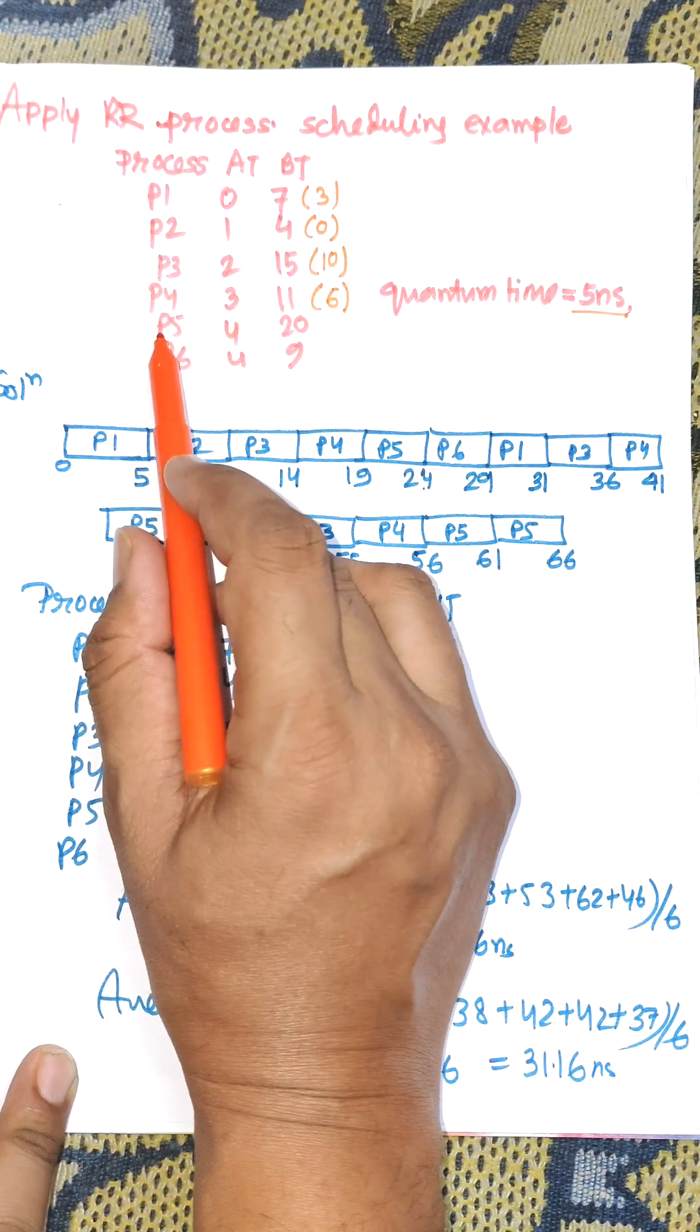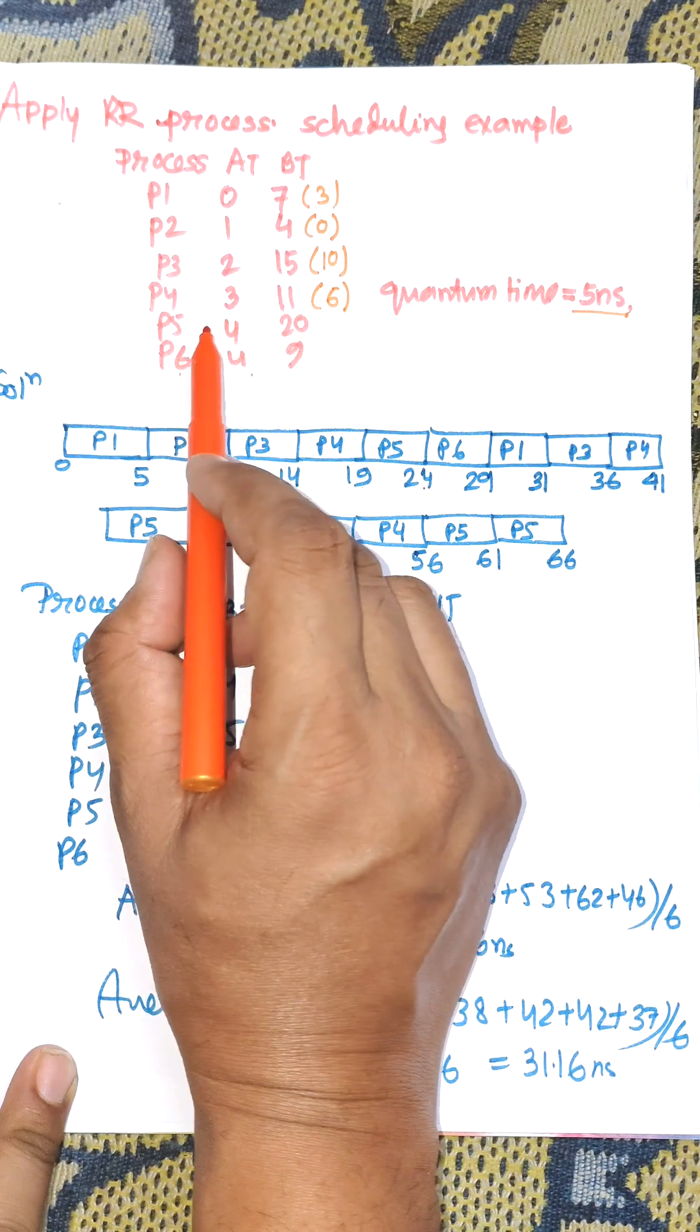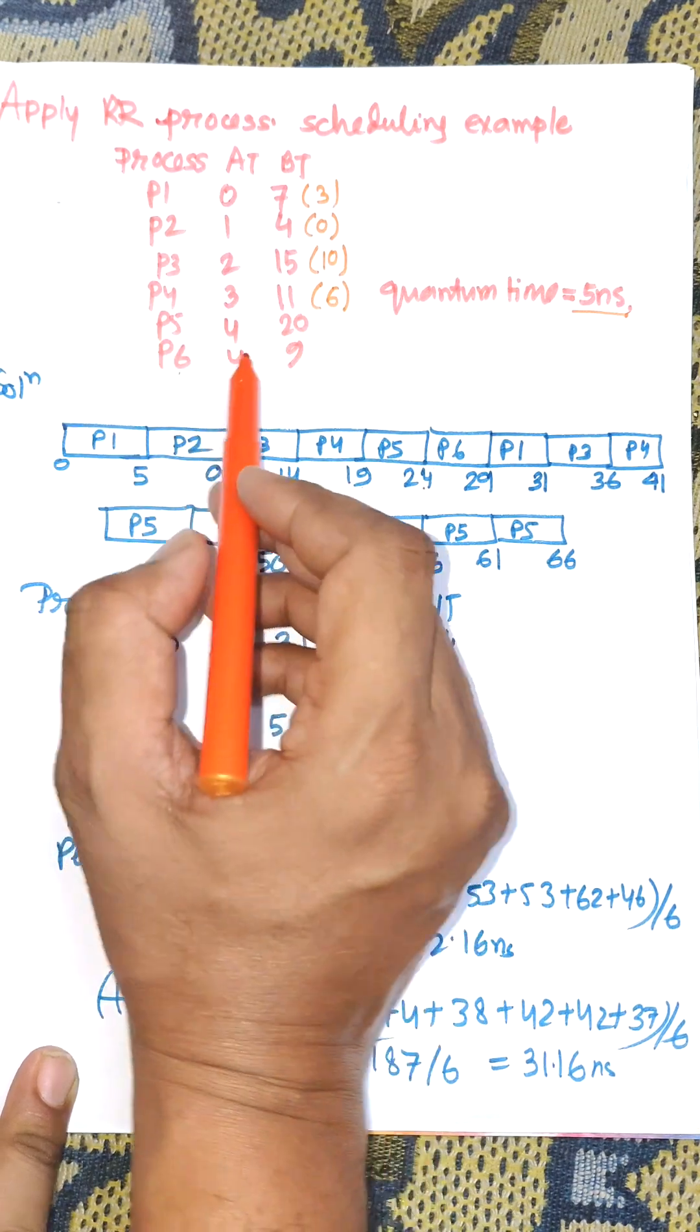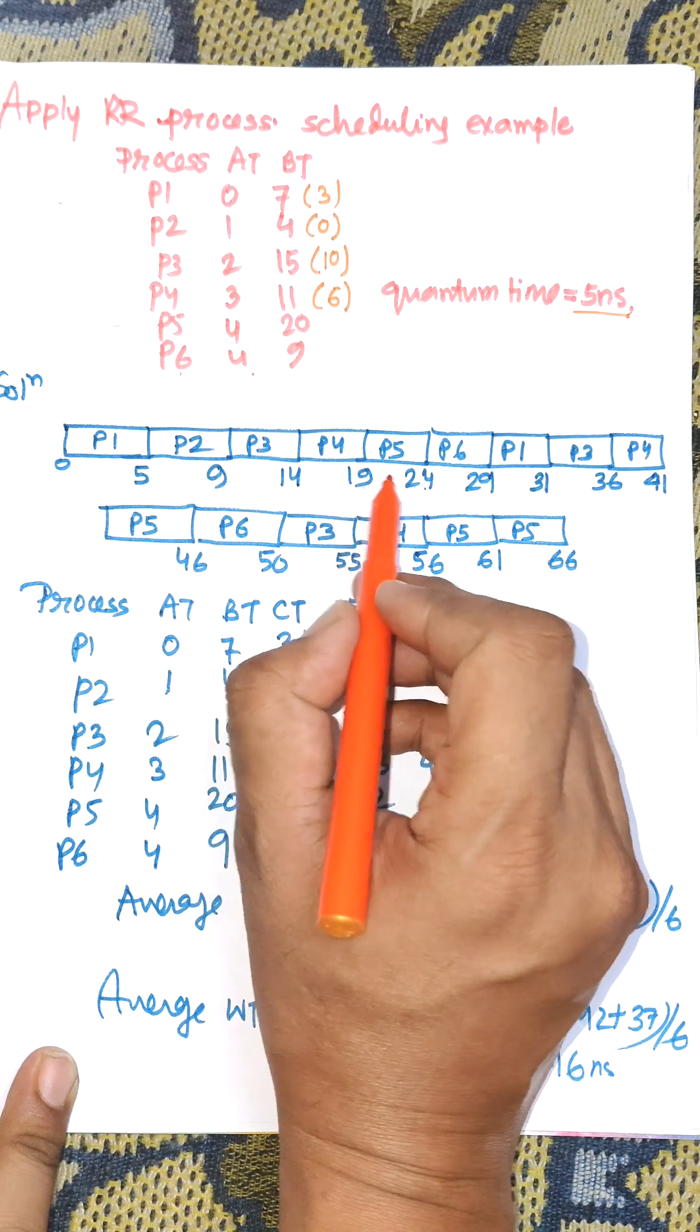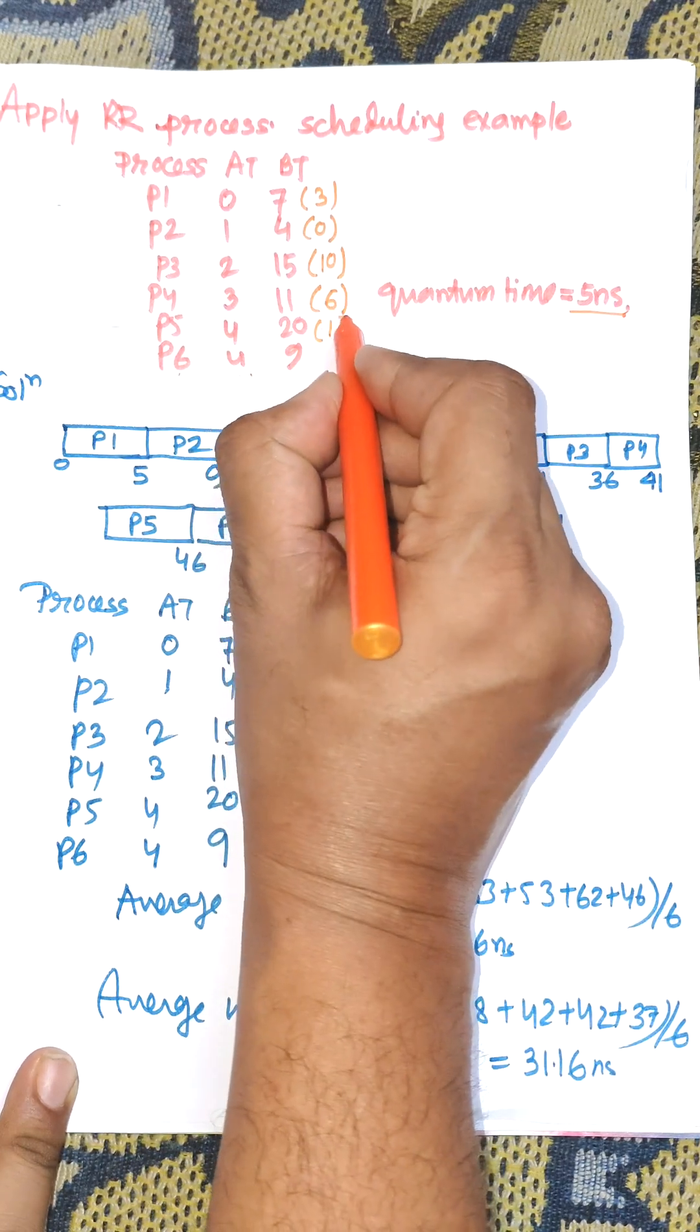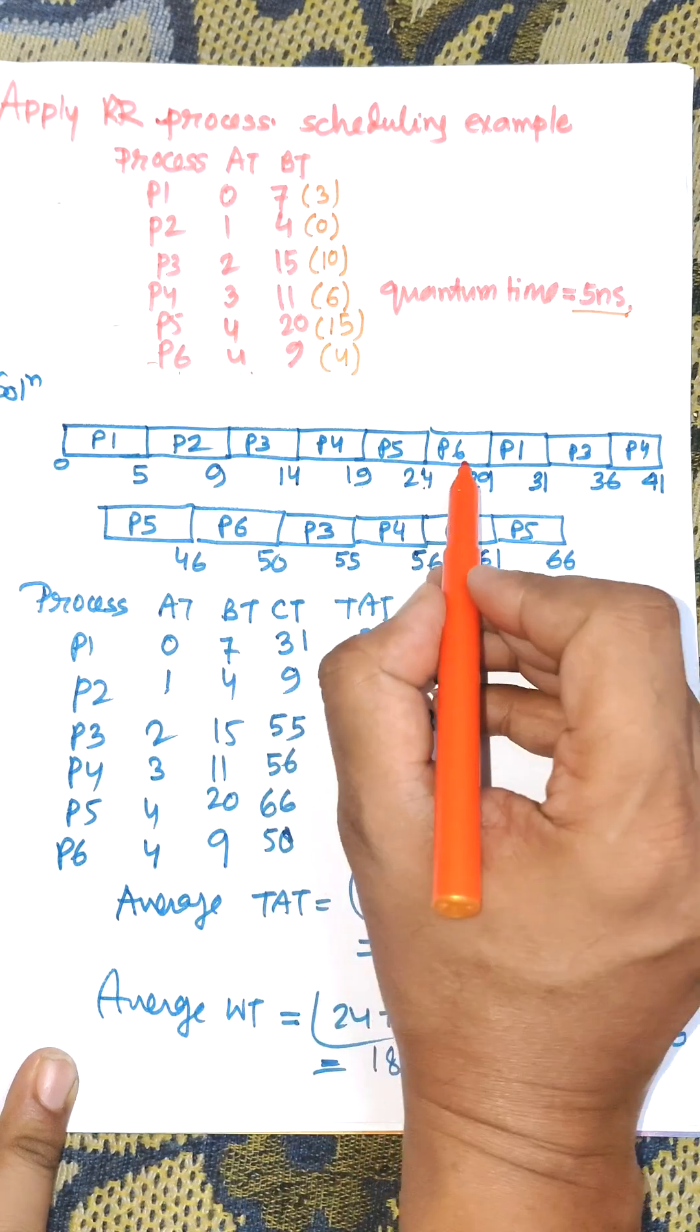Next is P5. Since both P5 and P4 have arrival time 4, according to first come first serve rule, P5 is selected. P5 executes from 19 to 24, with remaining time 15. Then P6 is selected with remaining time 4. P6 executes: 24 plus 5 equals 29.